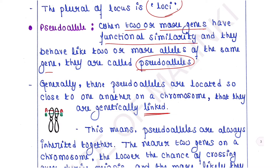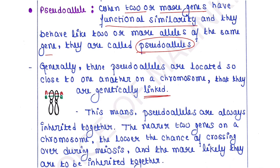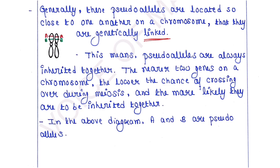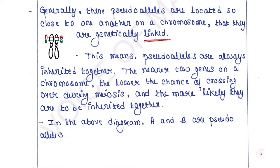Because pseudo alleles are genetically linked, they are always inherited together. The nearer two genes are on a chromosome, the lower the chance of crossing over during meiosis, and the more likely they are to be inherited together. In this diagram, you can see capital A and capital B genes are present on this chromosome — these two are different genes, but they are very closely related and are pseudo alleles.